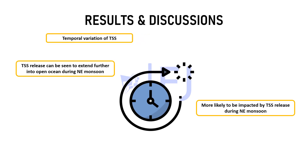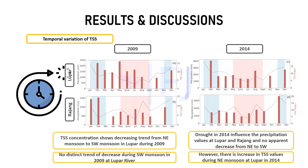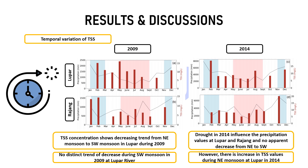Moving on to the temporal variation of TSS. The TSS release can be seen to extend further into the open ocean during the northeast monsoon, and the area is more likely to be affected by TSS release during the northeast monsoon compared to the southwest monsoon. TSS concentration shows an increasing trend from southwest monsoon to northeast monsoon in Lupa during 2009 and 2014.